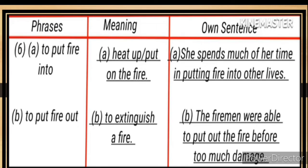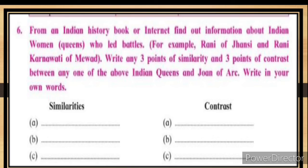Sixth pair: (a) 'To put fire into' — meaning: a heater, put on the fire. Sentence: She spends much of her time putting fire into the others' lives. (b) 'To put fire out' — meaning: to extinguish a fire. Sentence: The firemen were able to put out the fire before too much damage.